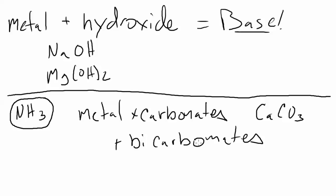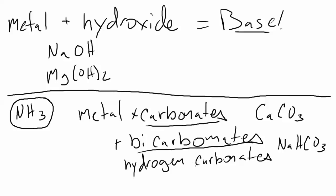An example of a metal bicarbonate, sometimes also called hydrogen carbonates, you'll see why in a second, would be like sodium bicarbonate. Anytime you see a metal ion combined with a carbonate polyatomic ion or a bicarbonate or hydrogen carbonate polyatomic ion, that's also a clue that that is going to be a base.